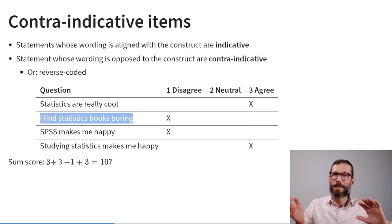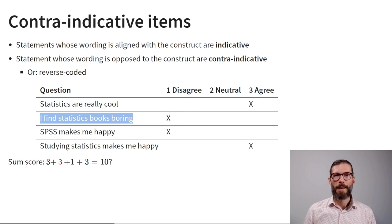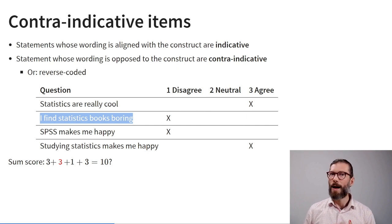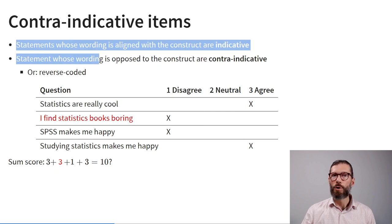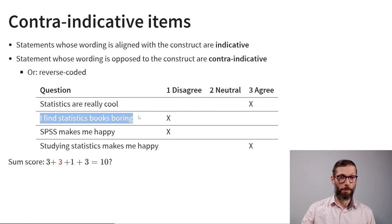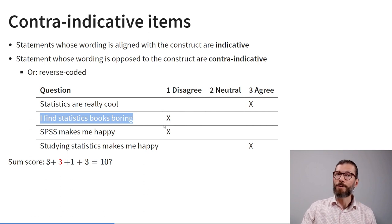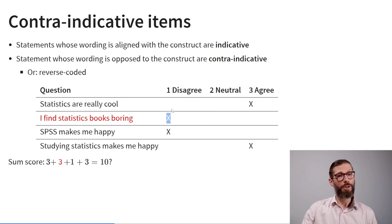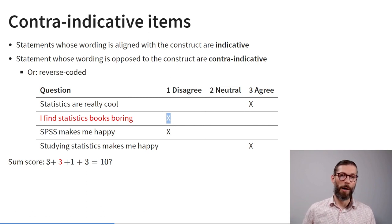Notice that one question is phrased in exactly the opposite direction from the others. That's called a contraindicative item. A statement whose wording is aligned with the direction of the construct is indicative; a statement whose wording opposes the construct is contraindicative. So if we're measuring love of statistics and a question says 'I find statistics boring,' that is reverse-coded or contraindicative. Even though the person responded with a 1, we should treat it as the highest possible score and reverse-code before calculating the sum score.